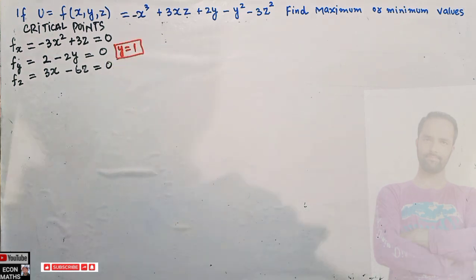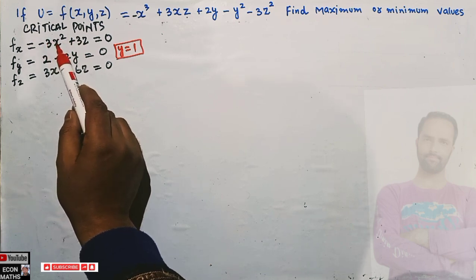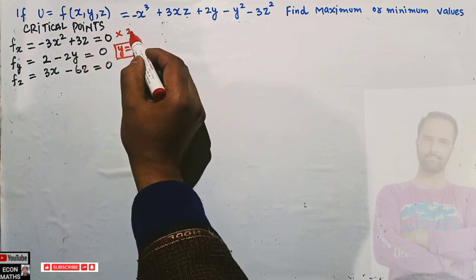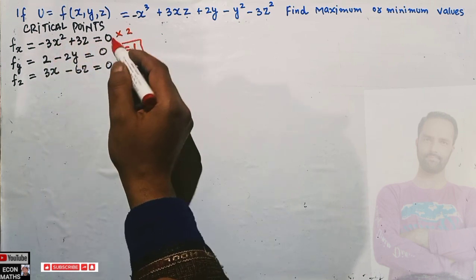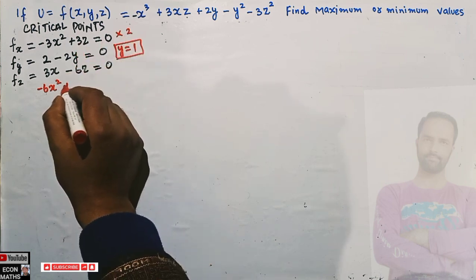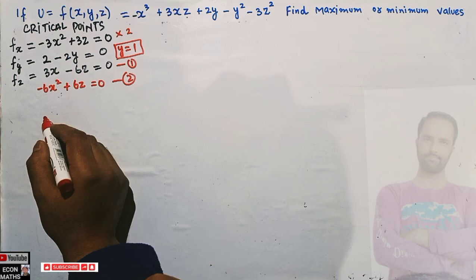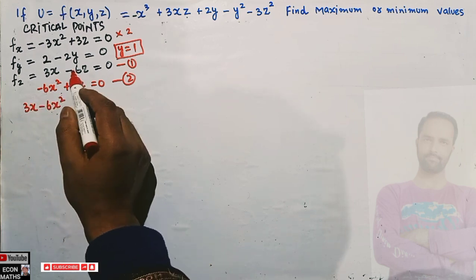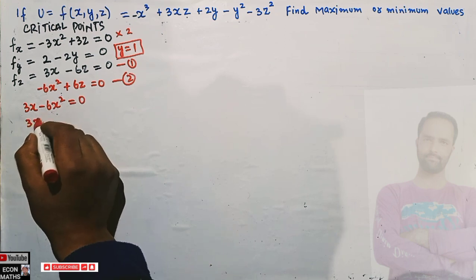To find x and z, we use the equations -3x² + 3z = 0 and 3x - 6z = 0 simultaneously. Multiplying the first equation by 2 gives -6x² + 6z = 0. Adding this to the second equation 3x - 6z = 0, the 6z terms cancel, leaving 3x - 6x² = 0.